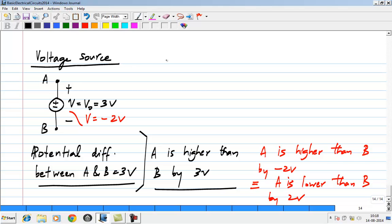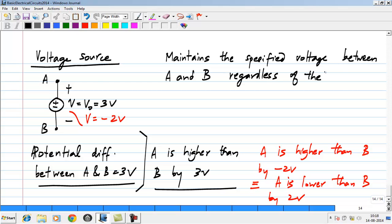And the property of a voltage source is that it maintains the specified voltage between A and B, regardless of the current flowing through it.